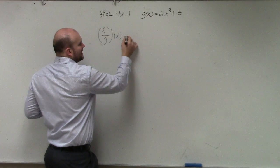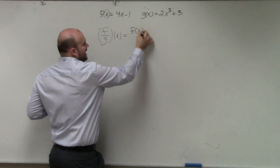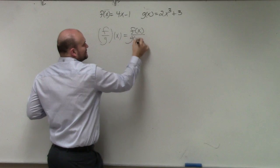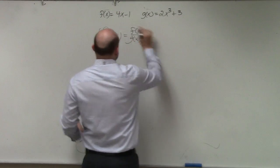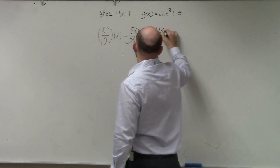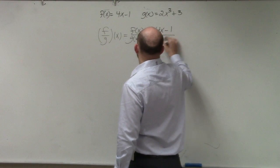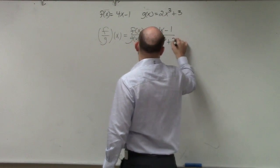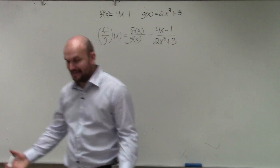F divided by g of x just means f of x divided by g of x. So all I'm going to do is take my f of x function, 4x minus 1, all over my g of x function. And that's it.